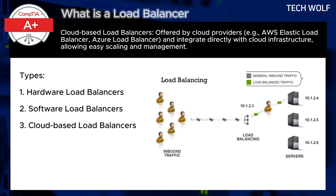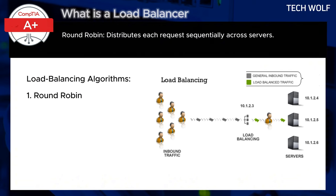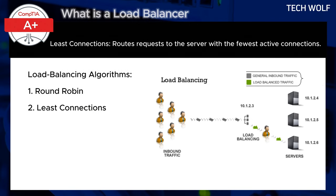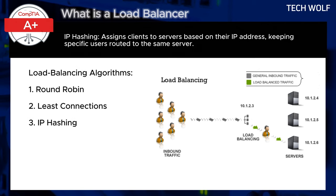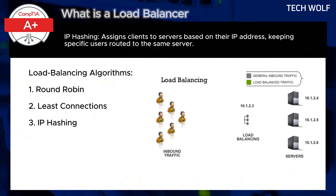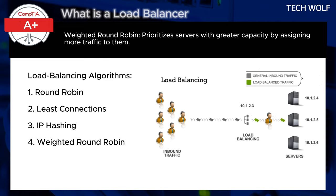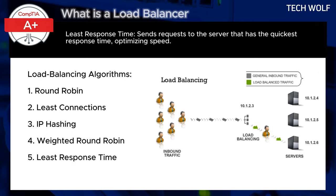Load balancers use different algorithms to determine how requests are distributed among servers. Round robin distributes each request sequentially across servers. Least connections routes requests to the server with the fewest active connections. IP hashing assigns clients to a server based on their IP address, keeping specific users routed to the same server. Weighted round robin prioritizes servers with greater capacity by assigning more traffic to them. Least response time sends the request to the server that has the quickest response time, optimizing speed.